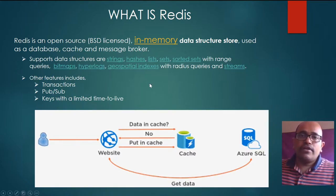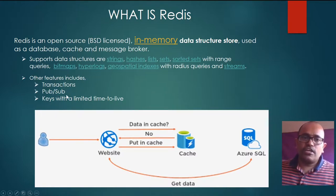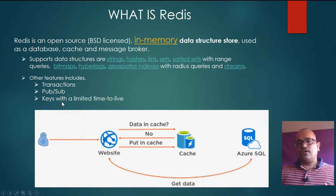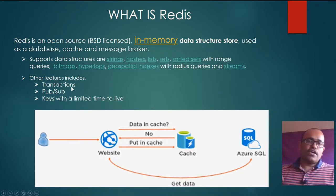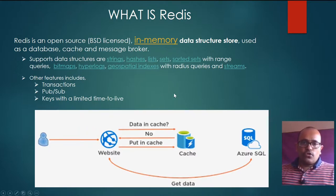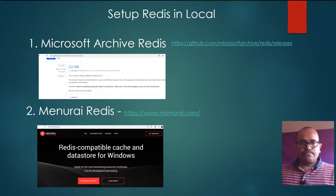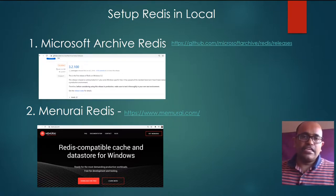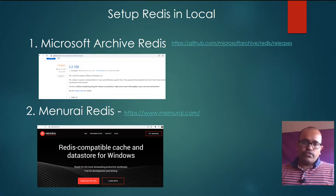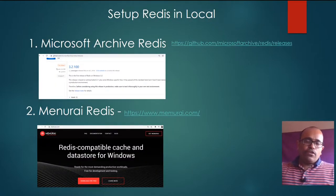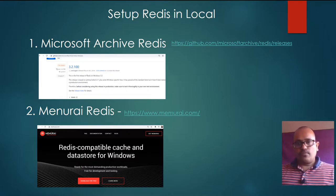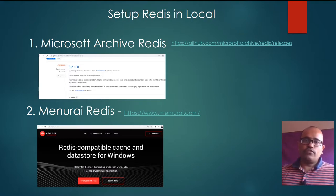Redis also comes with features like transactions, pub-sub, and keys with a limited time-to-live. I will cover pub-sub and transactions in another video along with ASP.NET Core. Now we will jump directly to the installation of Redis on your local. There are three ways: the first is Microsoft Archive Redis, the second is Memurai, and the third is Docker. I will go through each method and explain the pros and process of each one.